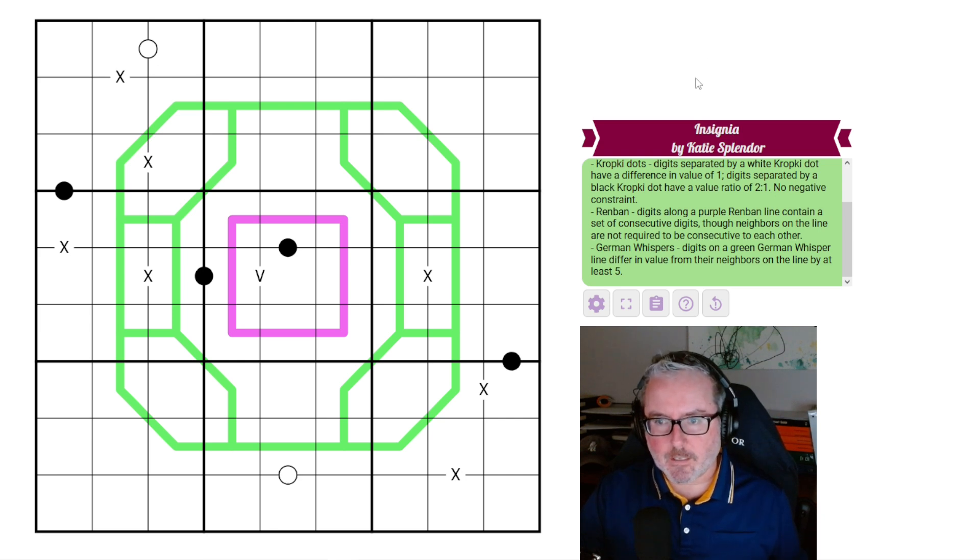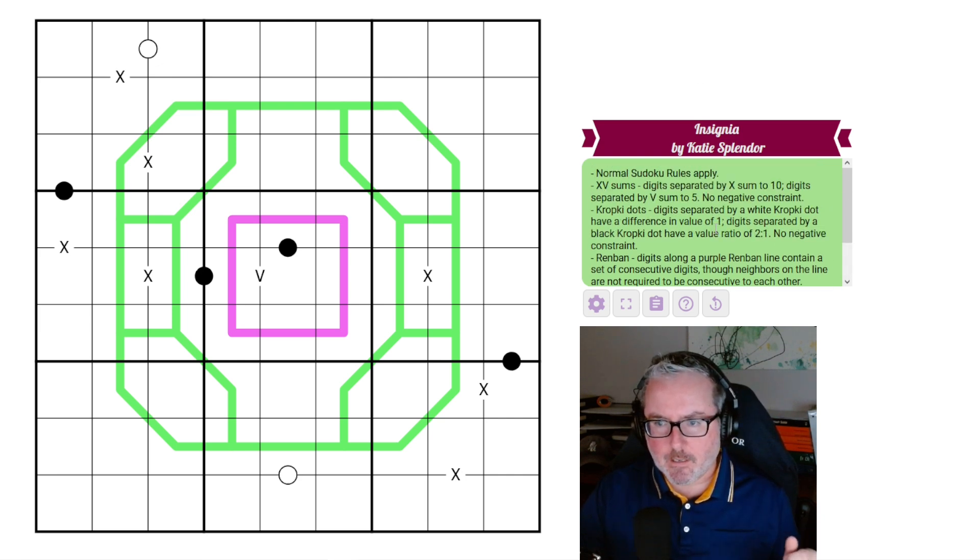So this one is called Insignia by Katie Splendor. Now I think I've seen a puzzle or two by Katie Splendor before. They go by a different moniker on their postings, but honestly I've forgotten what it is at this moment. I apologize. But I haven't gotten to any other puzzles before, I don't think. This one adds a little bit of backstory as well, if I understand correctly, was created as a birthday homage to another setter as well. So that's a little bit of information there.